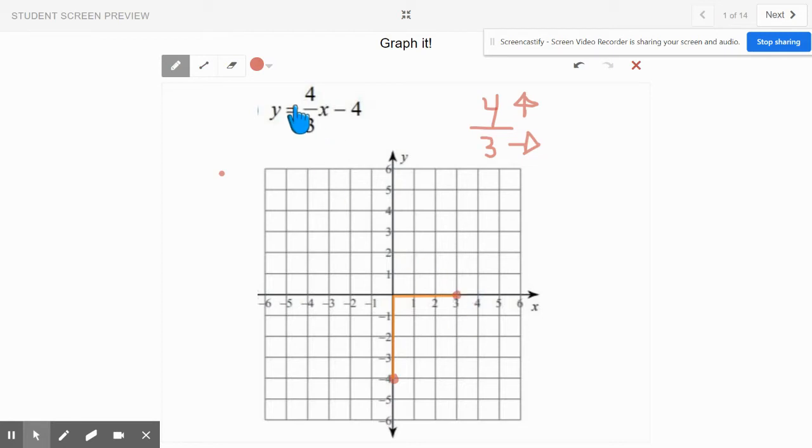If you wanted to keep the pattern going, you can do another rise 4, run 3, okay? And that would be a point as well. And then let's go ahead and draw this line through all three of these points if we could. And there's your graph.